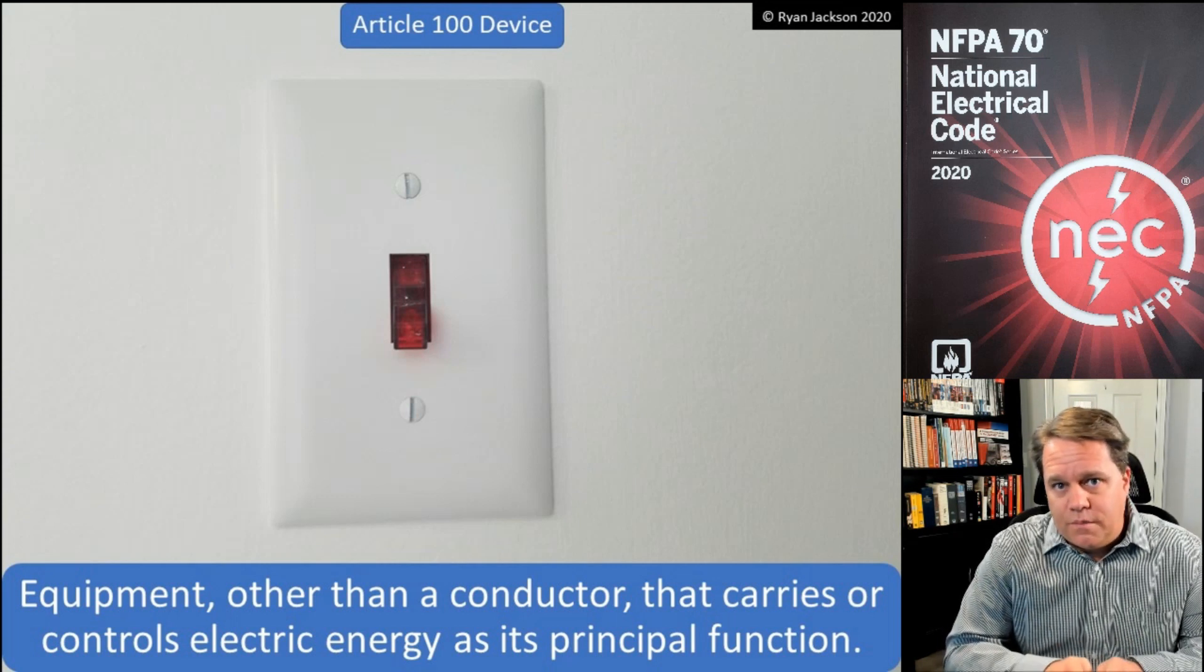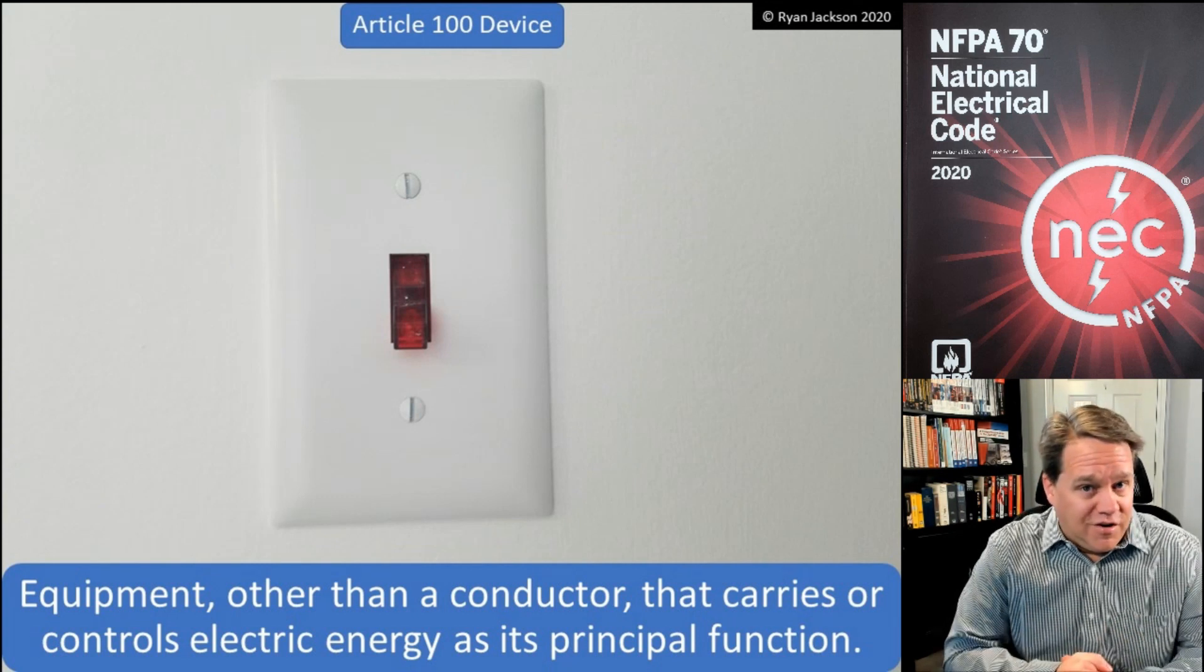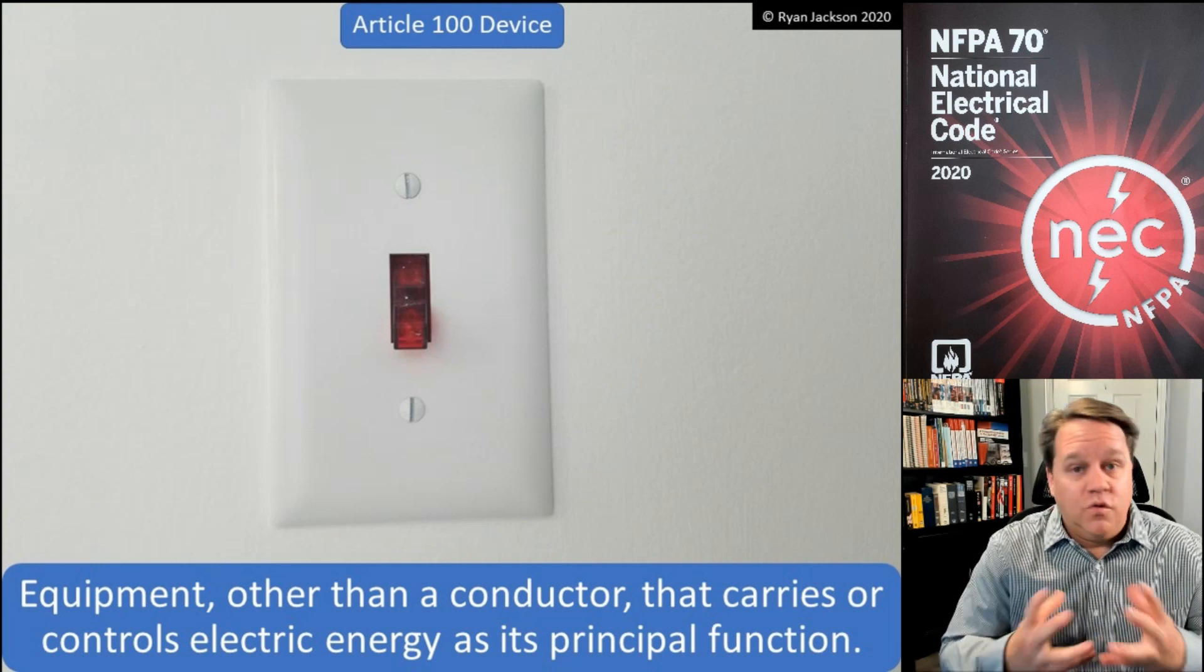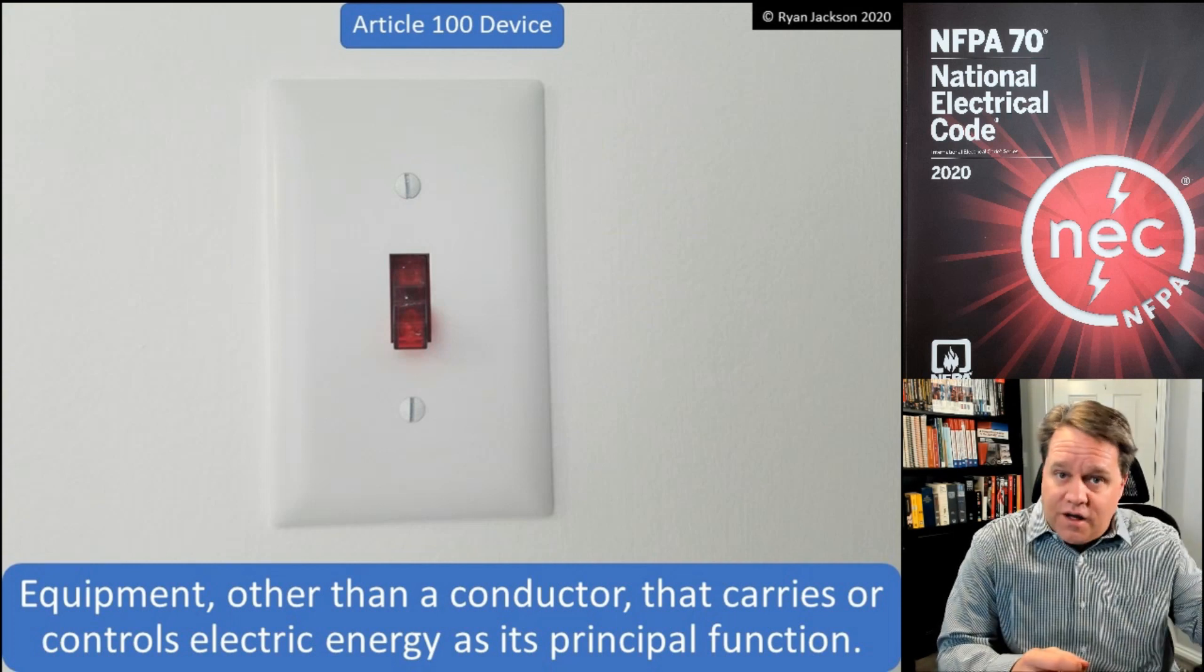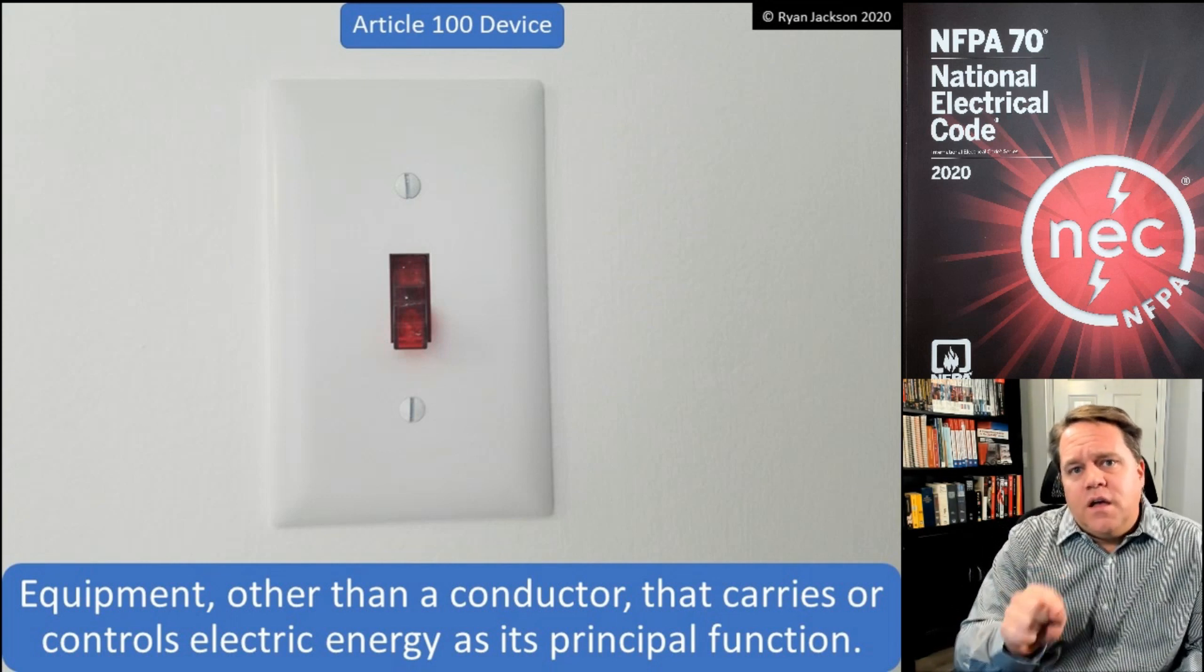So AFCIs used to be required just for receptacles in dwelling unit bedrooms, and then it said outlets in dwelling unit bedrooms. Okay, well an outlet is where we use electric energy. So you have lighting outlets, receptacles are installed at receptacle outlets.